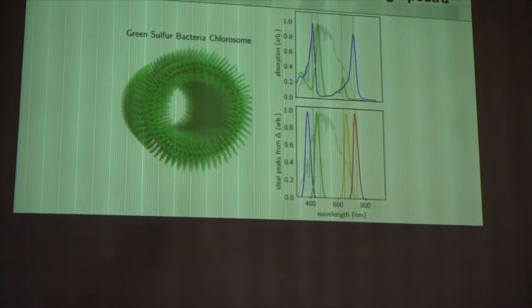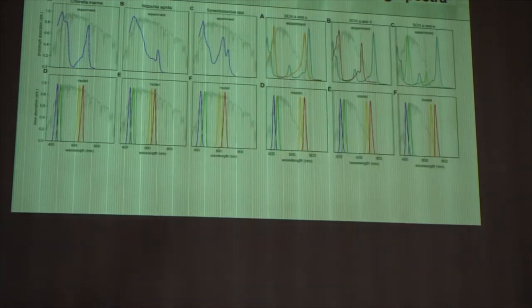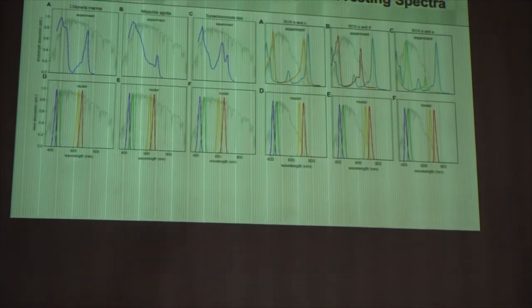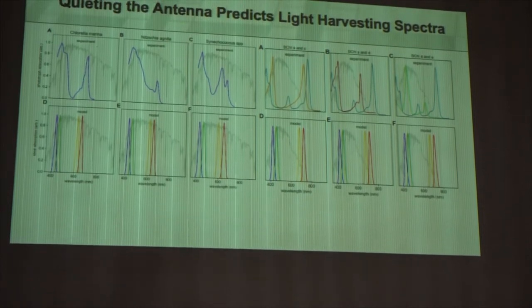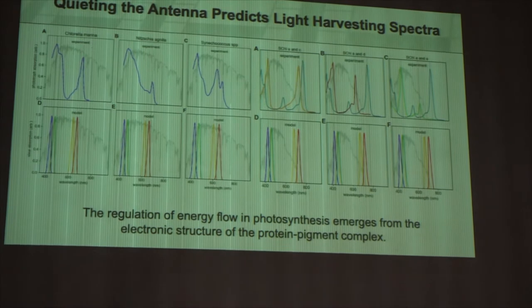So there seems to be some general behavior. And we went on to prove that this happens in a lot of organisms. We now have a library of about 30 different organisms where the same simple model basically reproduces this idea that photosynthesis is basically regulating.